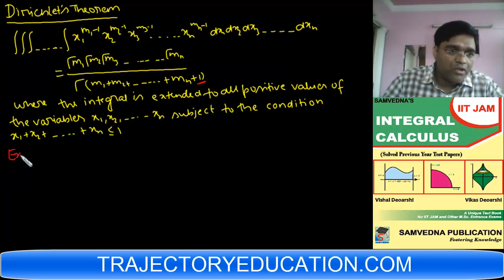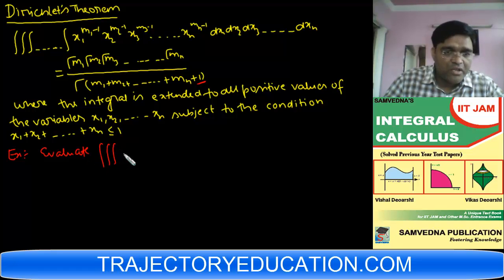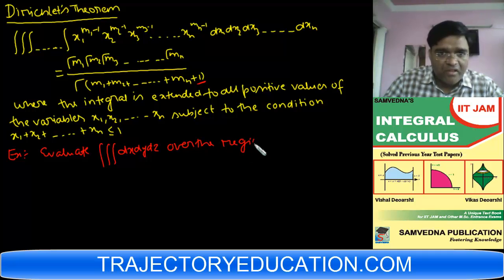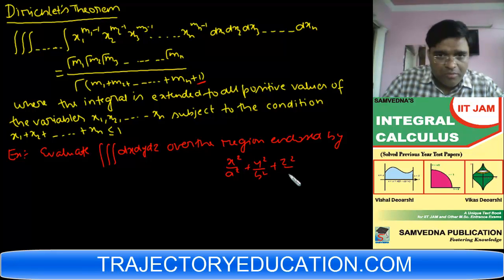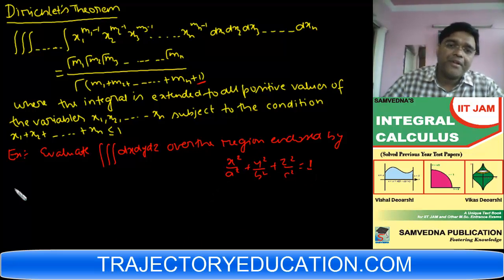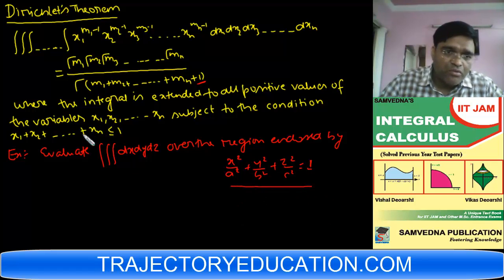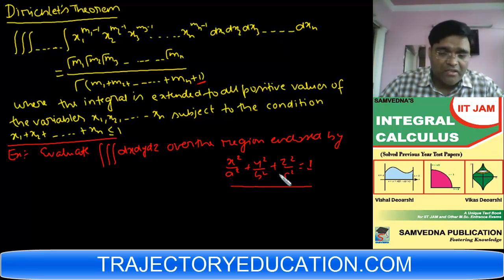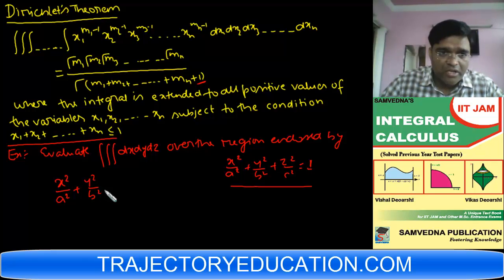I will take an example and tell you how useful it is. Suppose you are given: evaluate the triple integral dx dy dz over the region enclosed by an ellipsoid. We have to convert this into Dirichlet's condition. In order to evaluate this, first we have to transform the variables such that this surface equation converts to the Dirichlet condition. Here we are finding the volume, or the triple integral, over the region enclosed by the ellipsoid.